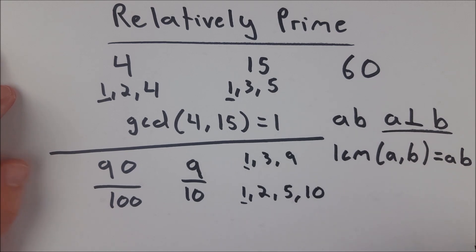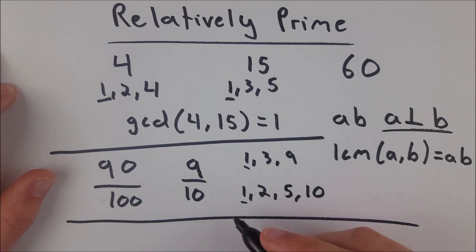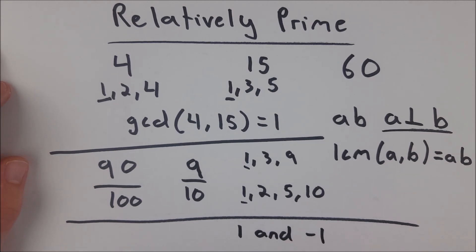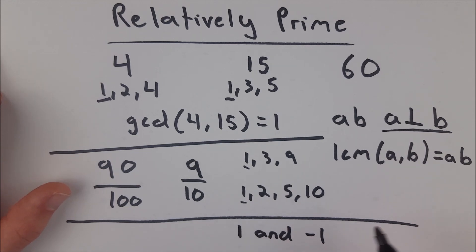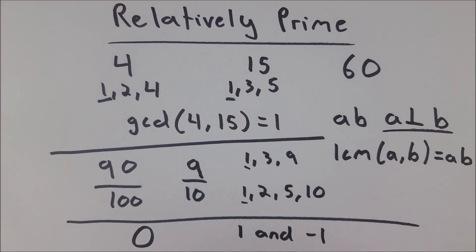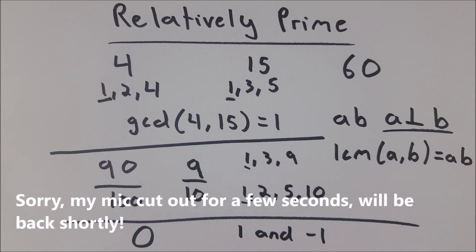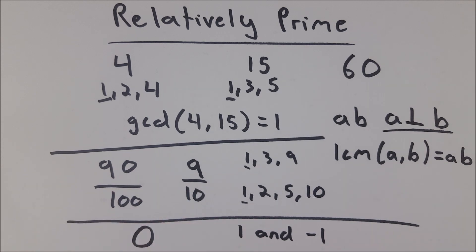Some fun properties of relatively prime numbers: 1 and -1 are the only integers that are relatively prime to every integer. One and any other integer will have no common factor greater than one. Also, 1 and -1 are the only integers that are relatively prime to zero, because 1 and 0 have no common factor greater than one — since 1 is the only factor of 1. We're talking about positive factors when discussing relatively prime numbers.